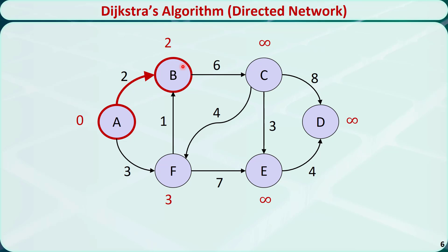Now let's check the neighbors of the visited nodes. Node B has just one direct neighbor, node C. The distance of node C is 2 plus 6, equal to 8, which is smaller than positive infinity, so we replace it with 8. Out of all the unvisited nodes, node F has the shortest distance, so we move from A to F. Node F has two direct neighbors, node B and node E. The distance of node B is 3 plus 1, equal to 4, which is larger than the old value 2, so we leave it at 2. The distance of node E is 3 plus 7, equal to 10, which is smaller than positive infinity, so we replace it with 10.